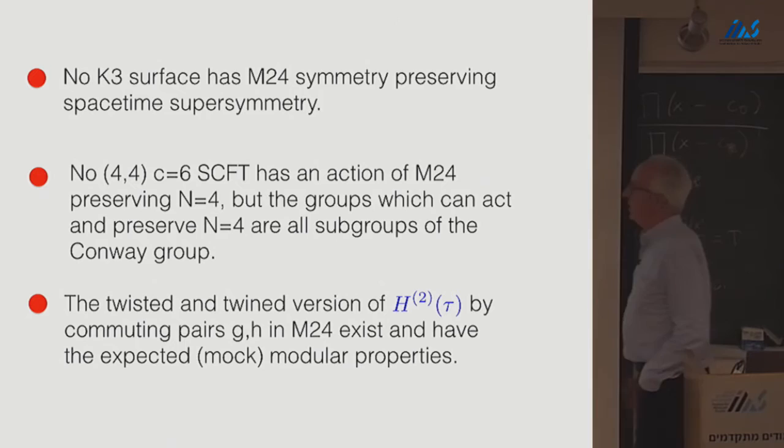So, this has been hard to understand, because no K3 surface has M24 symmetry that preserves space-time supersymmetry. That is a symplectic automorphism. No 4,4 C equals 6 compact superconformal field theory has an action of M24 that preserves the N equals 4. But, the groups which can act and preserve N equals 4 are all subgroups of the Conway group. And, it turns out, you can do both twisting and twining, and for commuting pairs of G and H and M24, these all exist and have the expected Mach modular properties. So, it looks like a conformal field theory, but we don't know what that is.